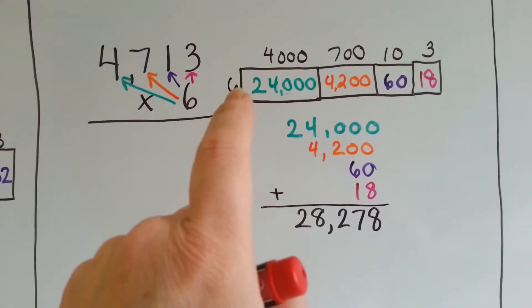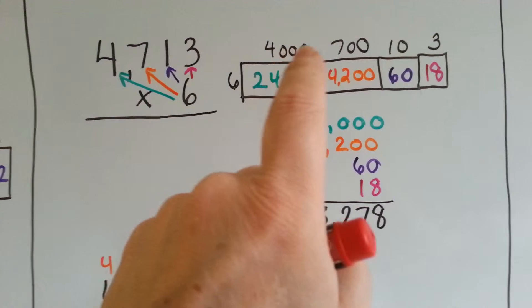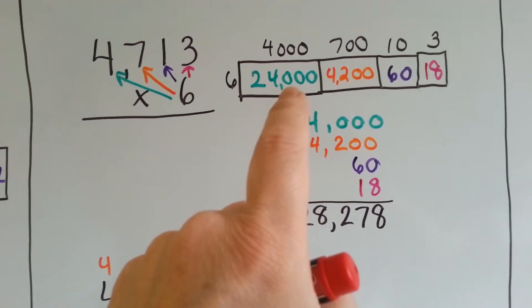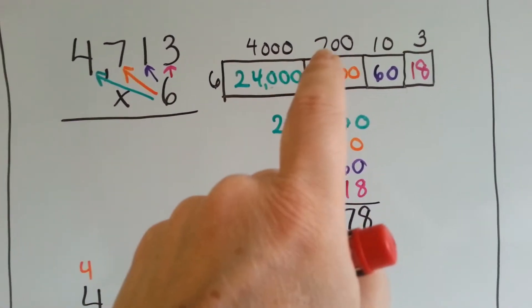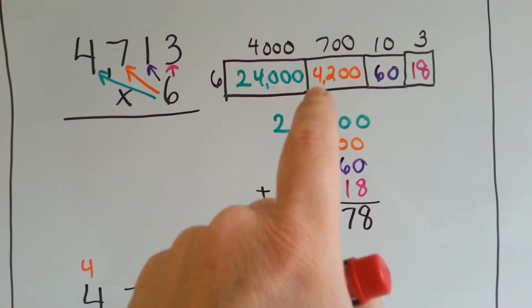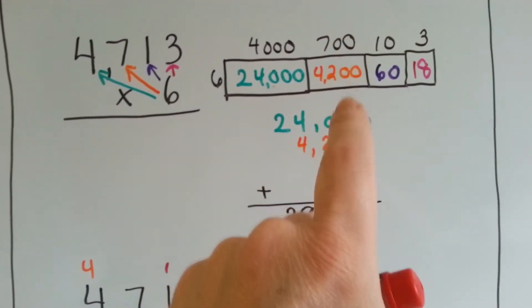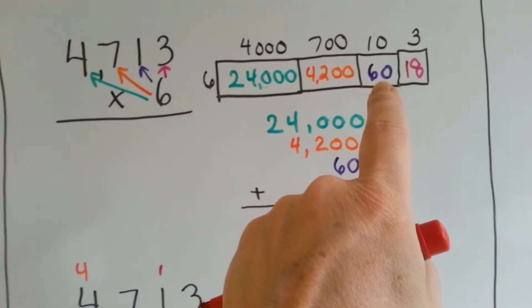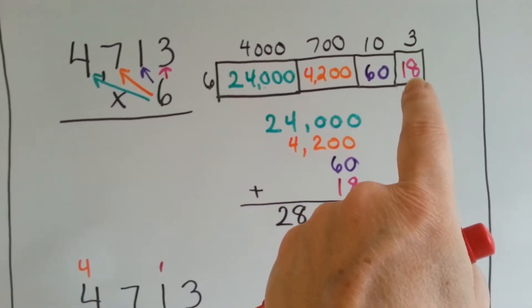6 times 4 is 24, and we add the three zeros. We get 24,000. 6 times 7 is 42, and then we add the two zeros. 6 times 10 is 60, and 6 times 3 is 18.